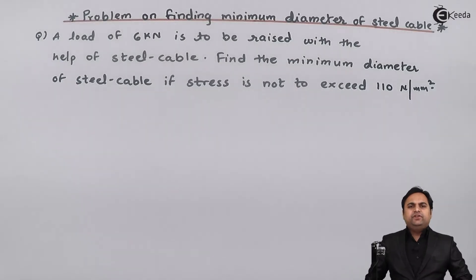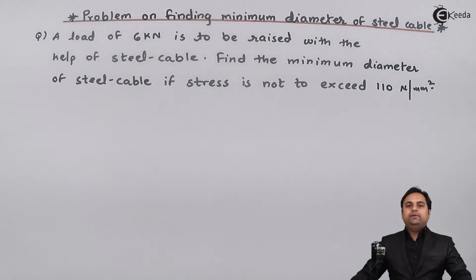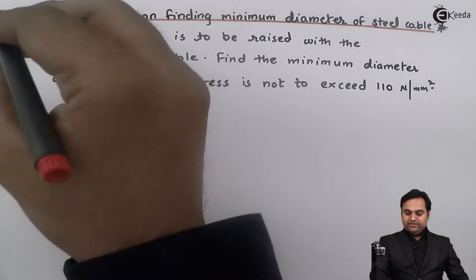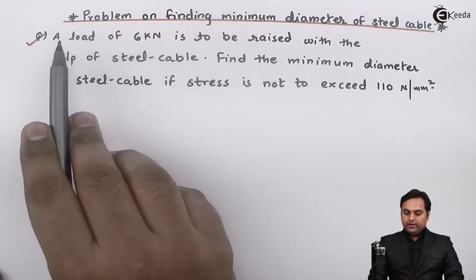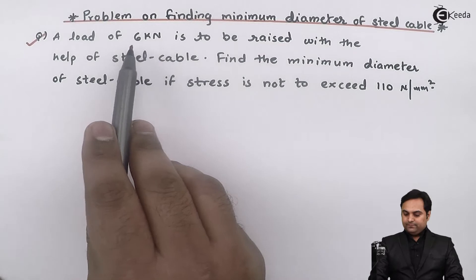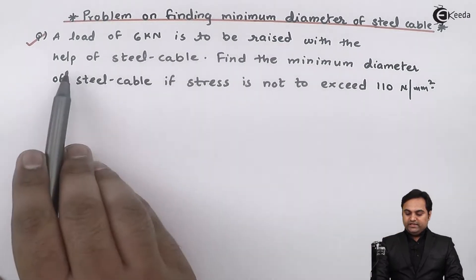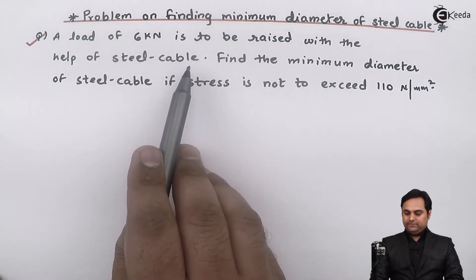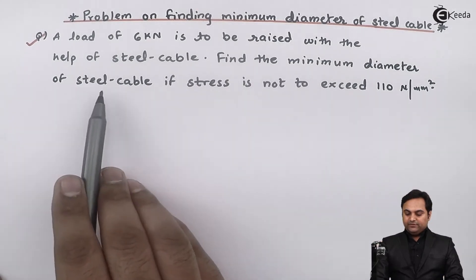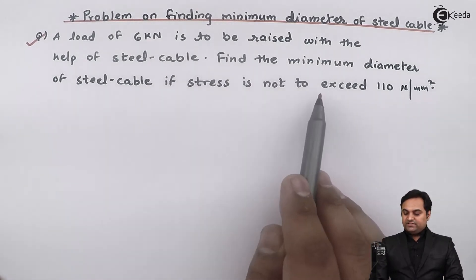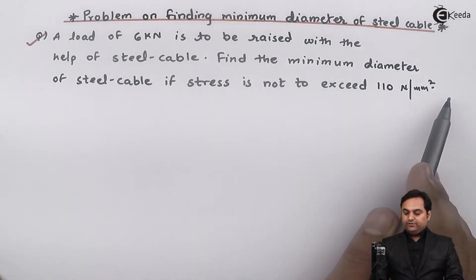Hello friends, in this video we are going to see a problem on calculation of minimum diameter for steel cable. Let us read this question: A load of 6 kilonewtons is to be raised with the help of steel cable. Find the minimum diameter of steel cable if stress is not to exceed 110 Newtons per millimeter square.